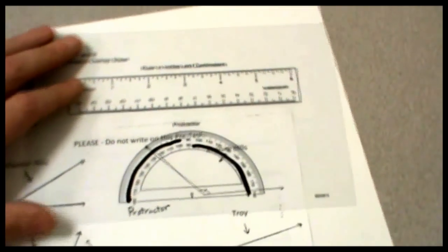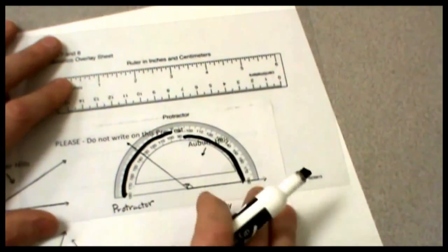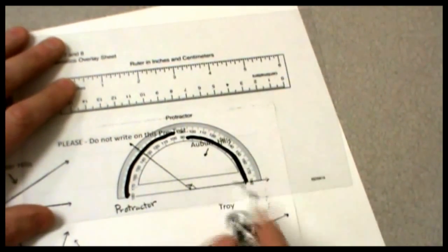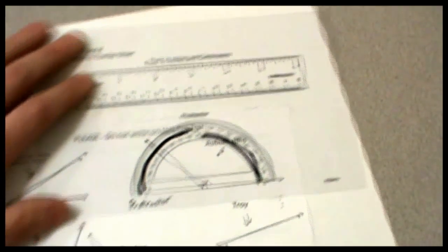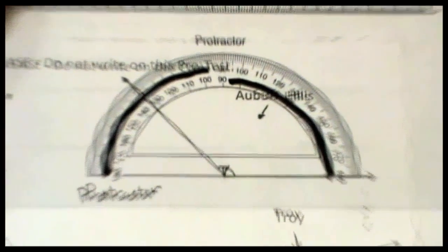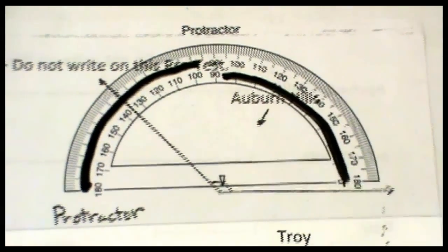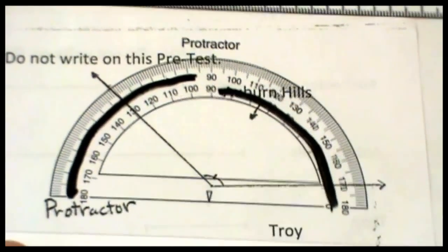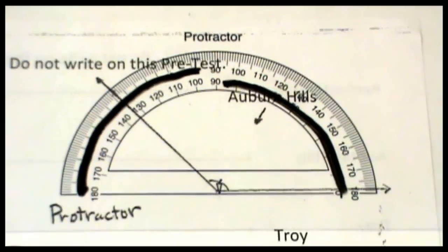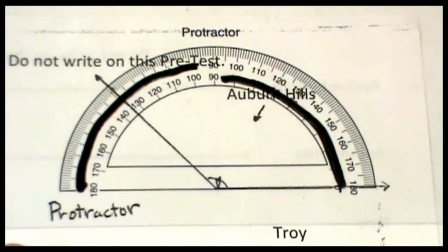I'm now getting ready to measure the Auburn Hills obtuse angle with my protractor that has all the numbers less than 90 blackened out. So, as I place the protractor onto the angle, I make sure that the triangle is placed into the vertex of the angle, and I'm lining that bottom line right up along the zero degree mark.